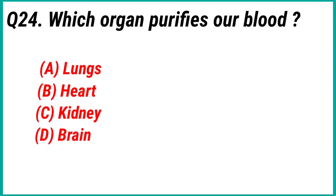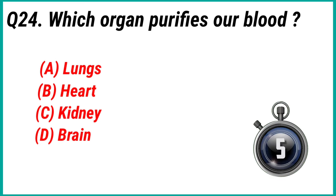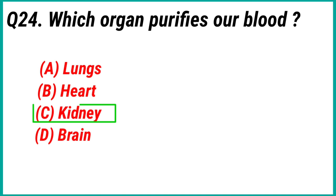Question 24: Which organ purifies our blood? Answer option C: Kidney.